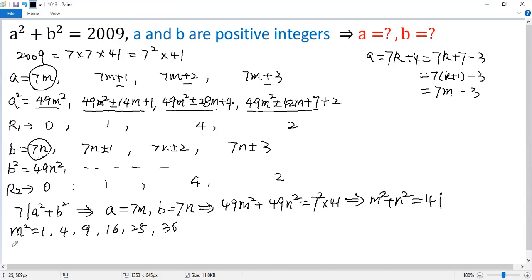So the corresponding value for n squared would be, because the sum equals 41, n squared should be 40, then 37, then 32, then 25, then 16, then 5. So you see only these two pairs are perfect squares, because m and n must be integers.